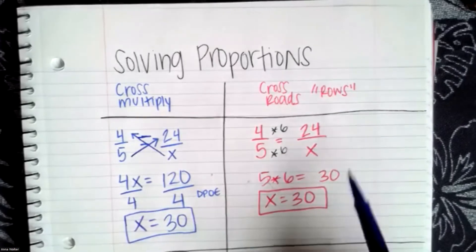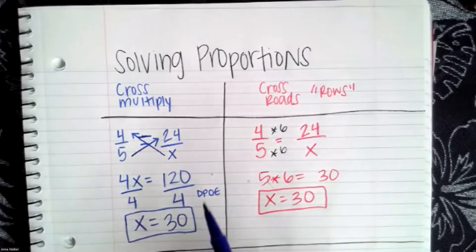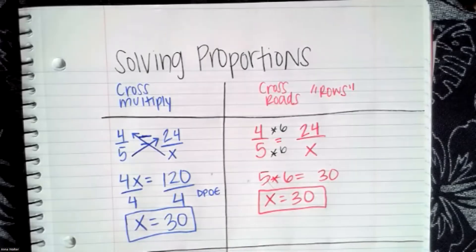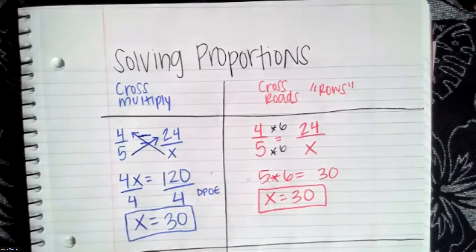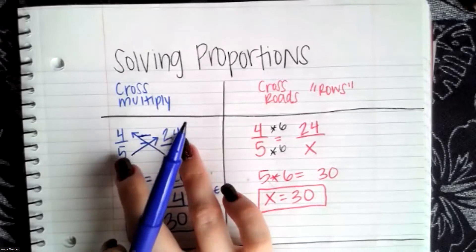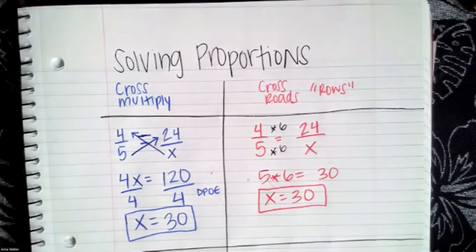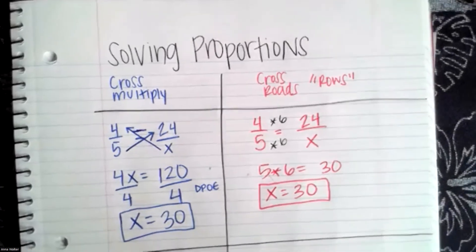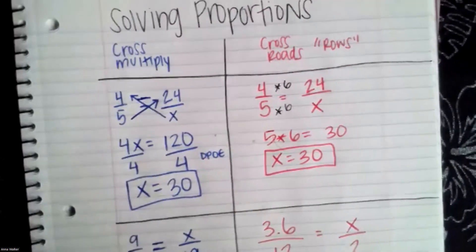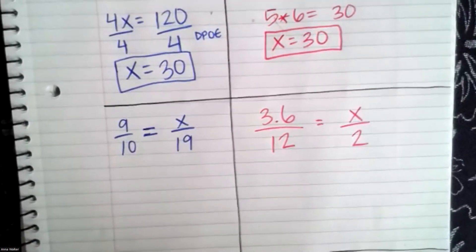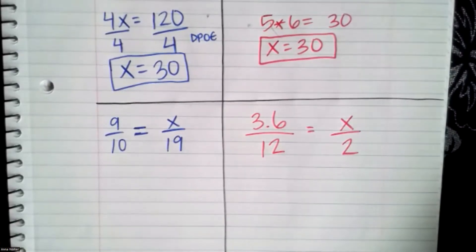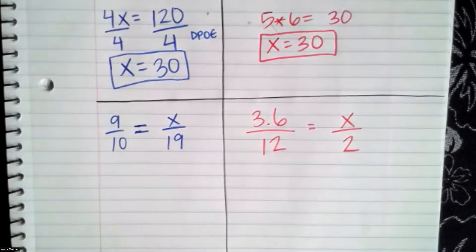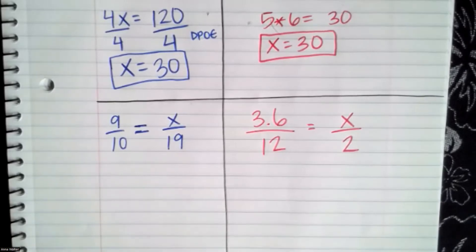So for this example it was much easier and more efficient to do cross roads. However, you can solve it this way where you set up an equation to solve using what's known as cross multiply. Let's look at some that are a little more complex. So you can draw a line if you want and then write these two other examples. The first one, let's do cross multiply again. We have the problem nine out of 10 is equivalent to X out of 19.